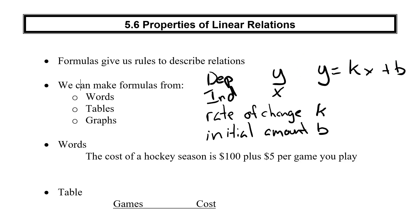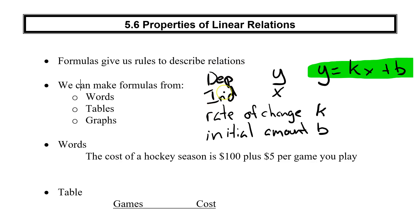From this generic formula, you can take any set of words, any table of values, or any graph and come up with a formula. So let's look at our first one. We've got words: the cost of a hockey season is $100 plus $5 per game you play. The first thing you need to figure out is what's your dependent and your independent variables — they're going to be ideas, concepts, words. Never numbers.